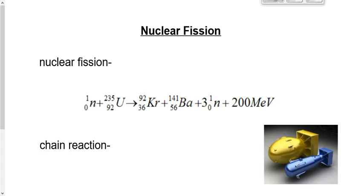Let's define fission first. If you've taken biology, you remember something about mitosis — cell division — versus meiosis, which is sex cell division. Mitosis is also sometimes called cellular fission: the dividing of a cell from one into two, two into four, four into eight, and so on. The word fission means dividing, so cellular fission is the dividing of a cell.